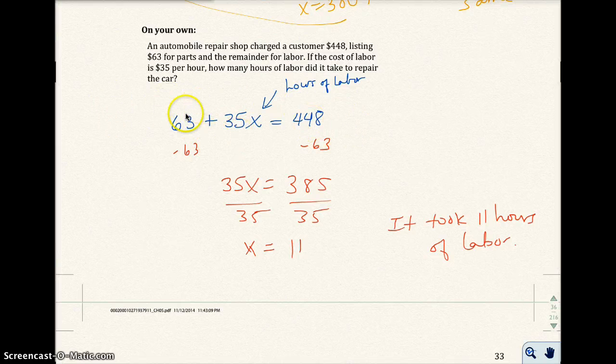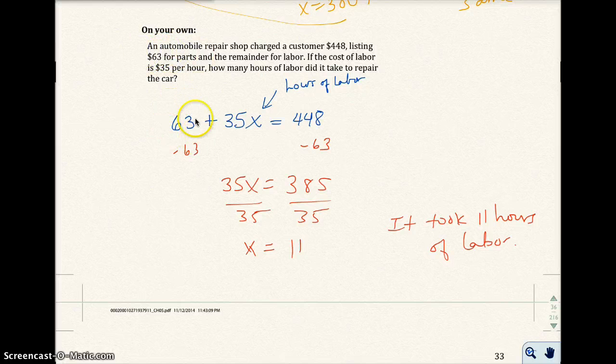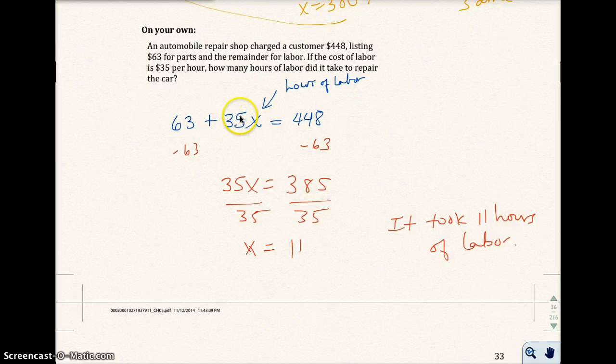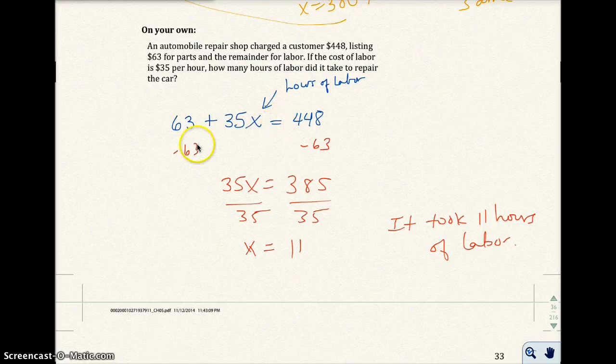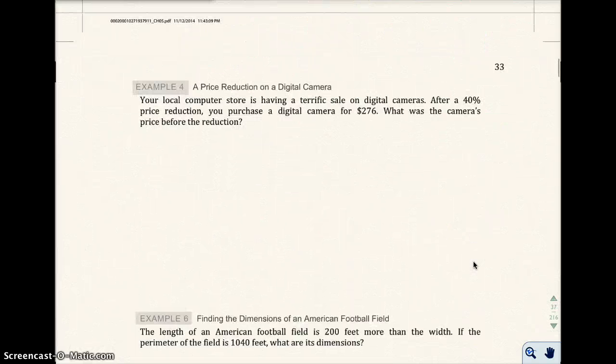If you have a problem setting up the equation, you have to read the problem carefully. The automobile repair shop charged a customer $448, leaving $63 for parts and the remainder for labor. The labor cost $35 per hour. So we add on $35 for labor per hour. We have no idea how many hours, so I'm going to do x here for the number of hours. That equals $448. When I solved this equation, I got x equals 11. So it took 11 hours of labor.